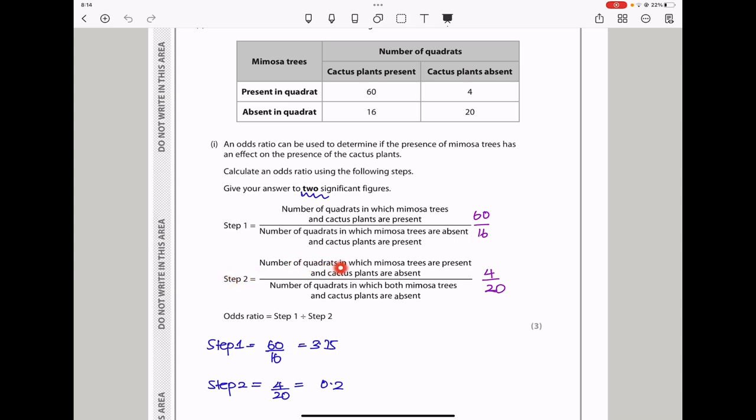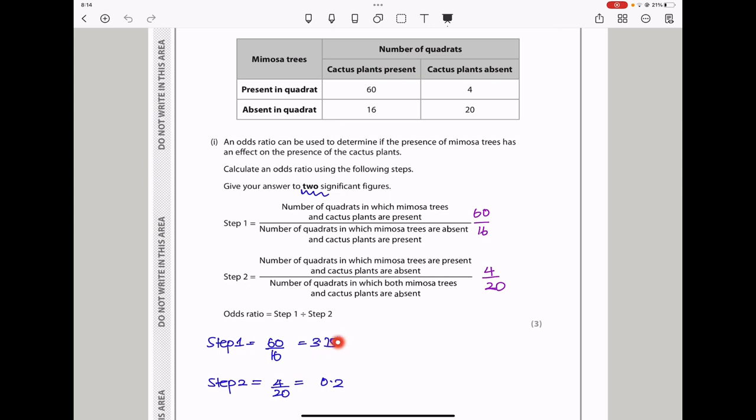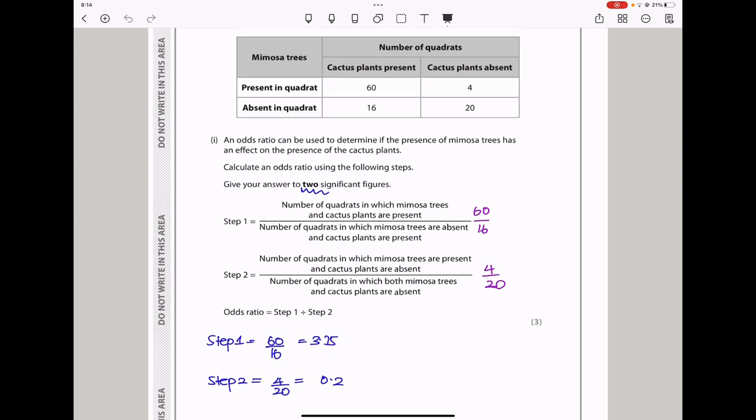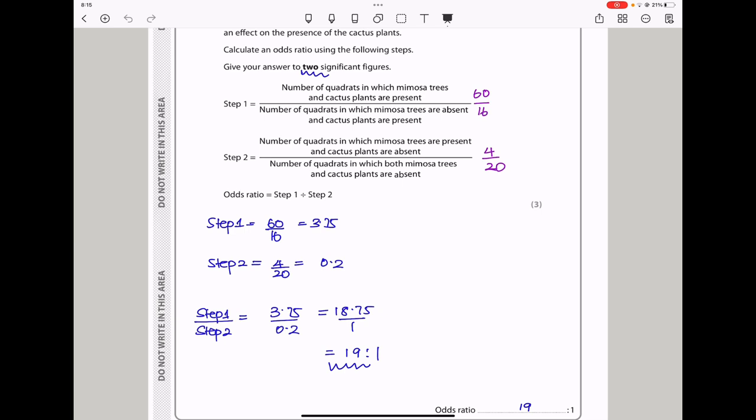In step 2, the number of quadrats in which mimosa trees are present and cactus trees are absent, this is going to be that. While the number of quadrats in which both mimosa and cactus trees are absent is going to be this, so I wrote 20. So if our odds ratio is going to be step 1 divided by step 2, if this one here is 3.75 and this is going to be 0.2, the final answer is going to be that divided by that, which gives us an odds ratio of 19 to 1. But when I round off to two significant figures, it becomes 19 to 1.